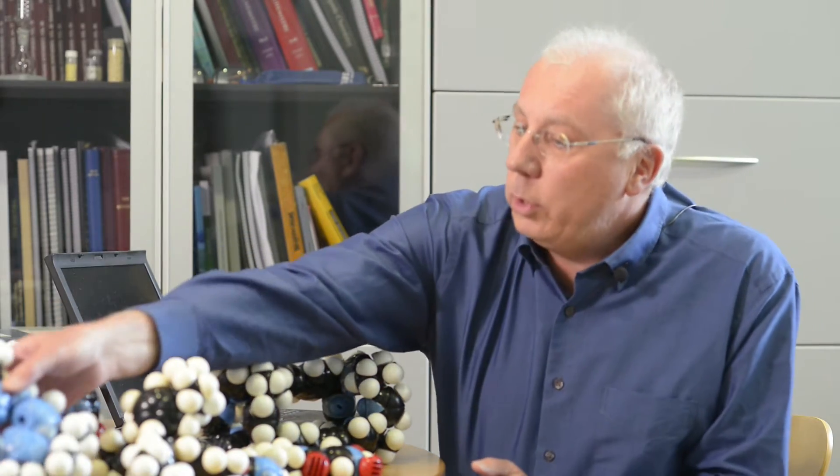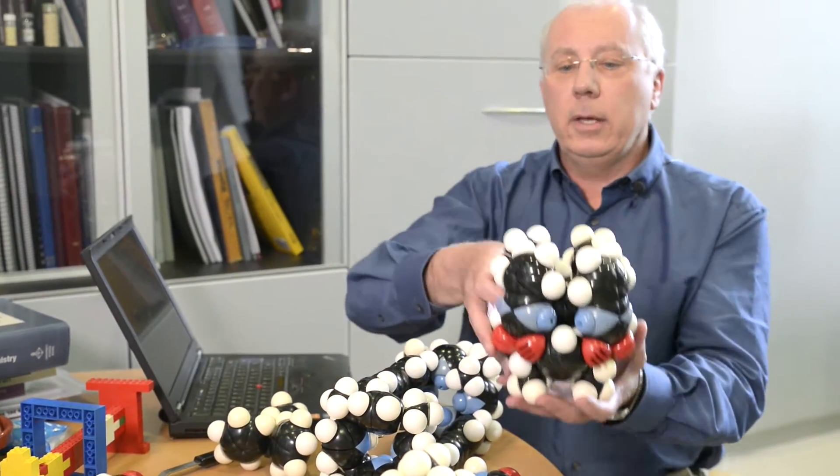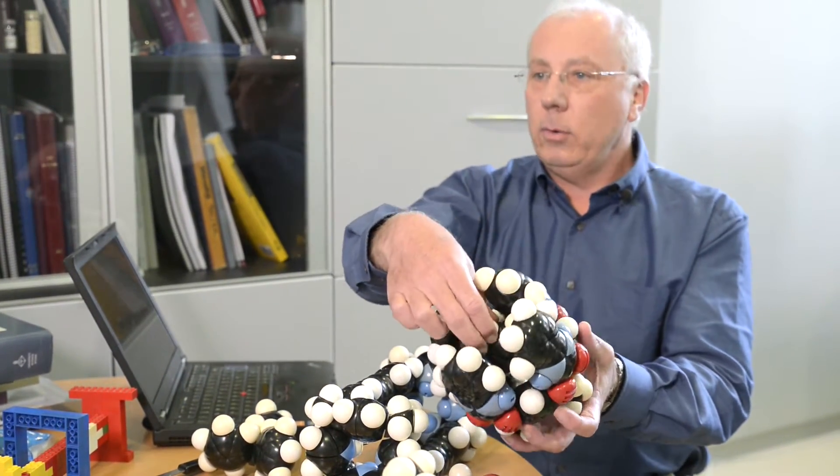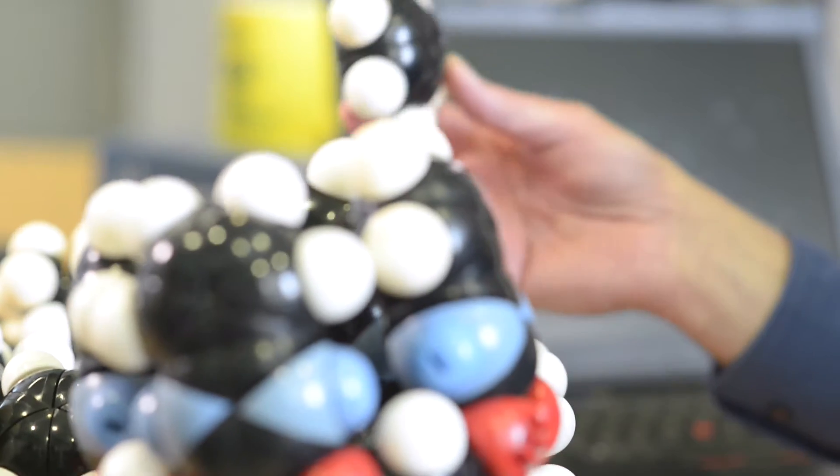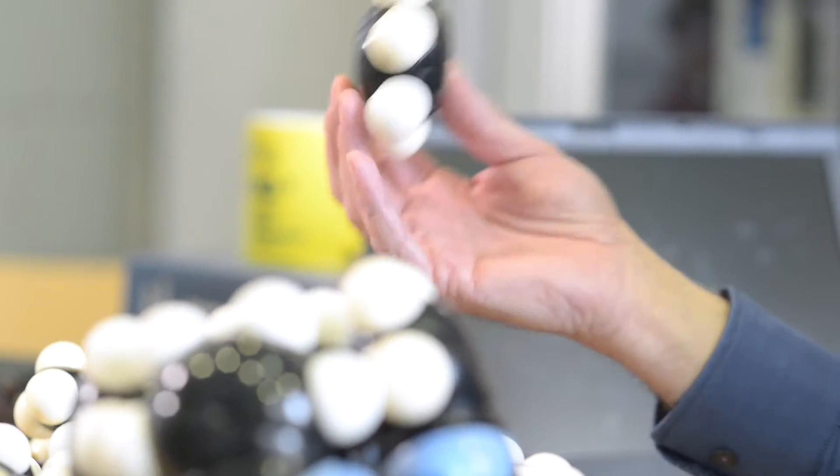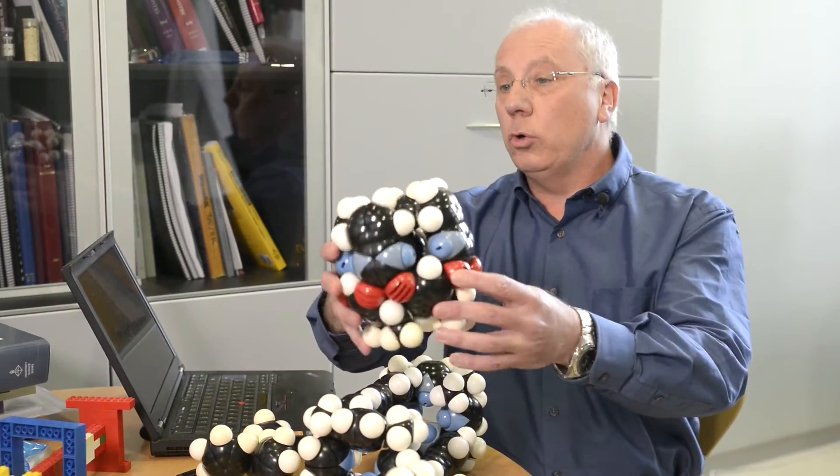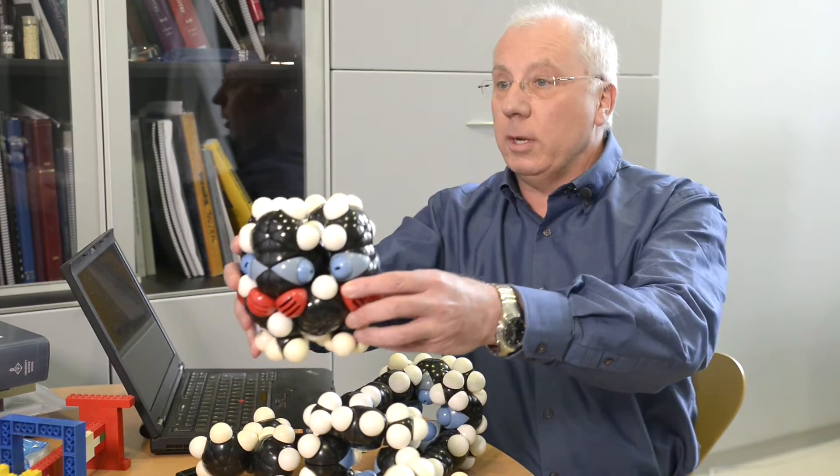Another molecule we work with, they have cavities. For example, this one here is called a cavitand and it has a big cavity. What you see here, this is a benzene molecule and the benzene molecule is the exact fit for the cavity. So in this way, with this molecule, we can recognize, for example, benzene.